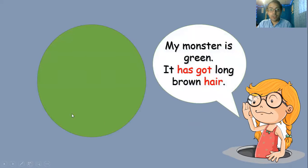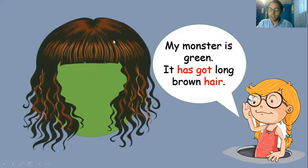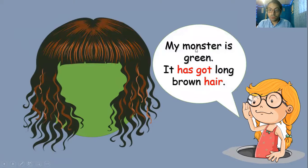My monster is green. Verde es el monstruo. It has got long brown hair — el cabello largo y marrón. It has got — usa 'it' porque es un monstruo, no es una persona, es un monstruo, entonces utiliza 'it'. It has got long brown hair.